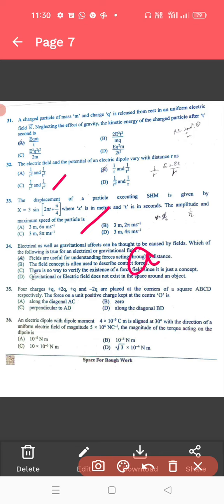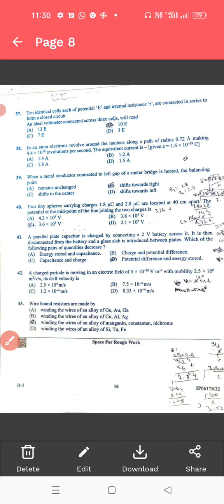For 35, 4 charges along the diagonal BD is a correct answer. 36, an electric dipole. For that, 10 power minus 4 newton meter is a correct answer. Similarly, we will move to the next page.